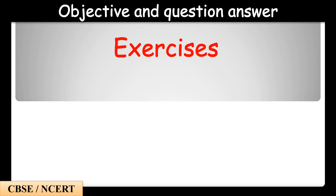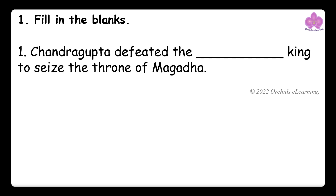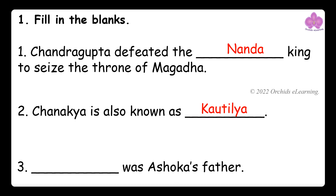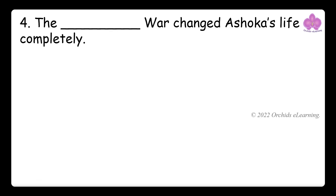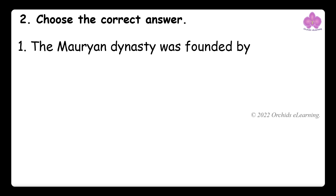Objective and question-answer of the lesson: The Mauryan Empire, Class 6 Social Science. Fill in the blanks: Chandragupta defeated the Nanda king to seize the throne of Magadha. Chanakya is also known as Kautilya. Bindusara was Ashoka's father. The Kalinga war changed Ashoka's life completely.